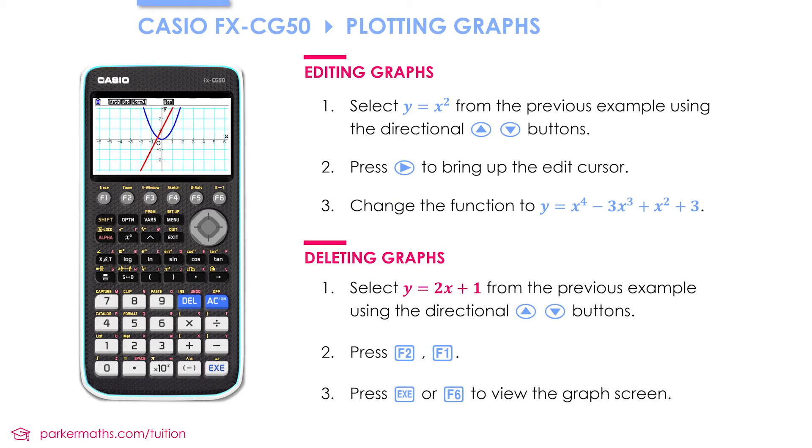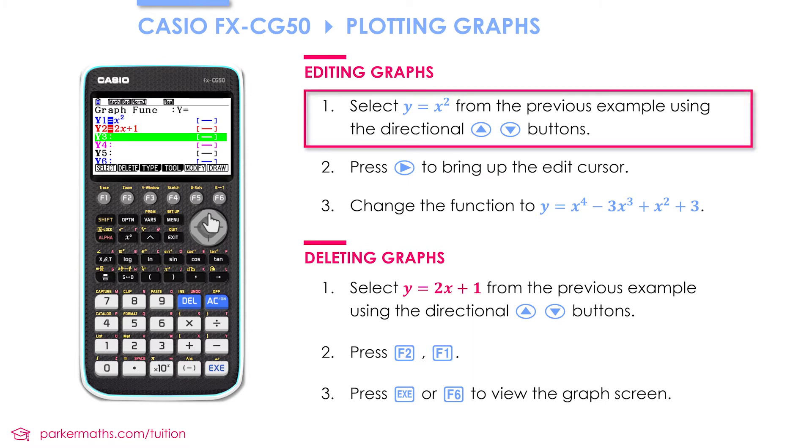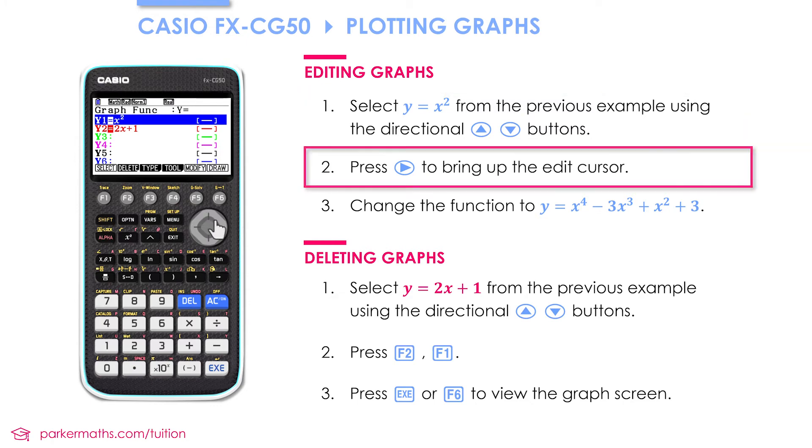Next up we'll look at how to edit and delete graphs. First of all I'm going to press EXIT to get back to the function window. Then I'm going to use the directional arrows to go back up to my X squared graph. And to edit a function I'm going to press the right directional arrow. And you'll see that a cursor appears within the function.